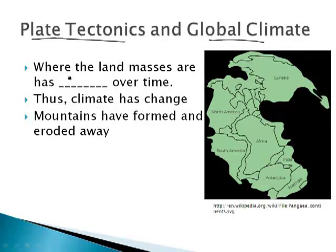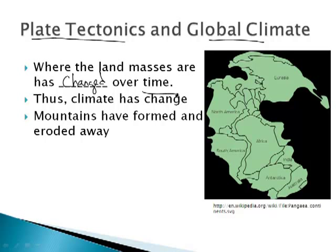Where the land masses are has changed over time. We learned in our plate tectonics unit that North America wasn't always necessarily in the northern hemisphere — it could have been on the equator — and that obviously causes climate to change. So when we look at an old climate, we also need to take into consideration plate tectonics, because Antarctica wasn't always on the bottom of the world.